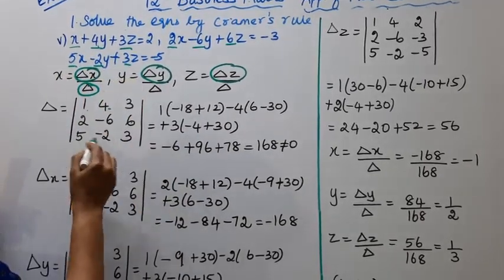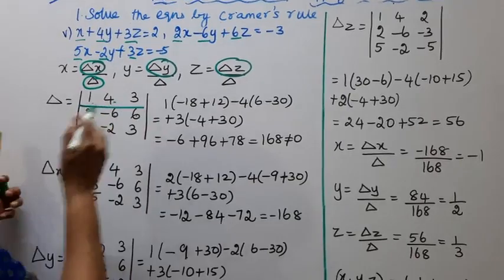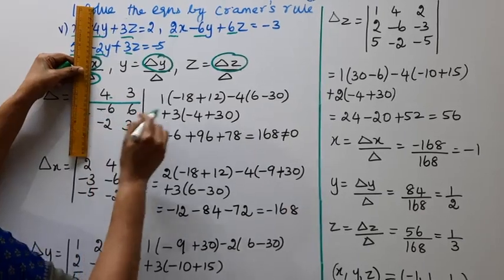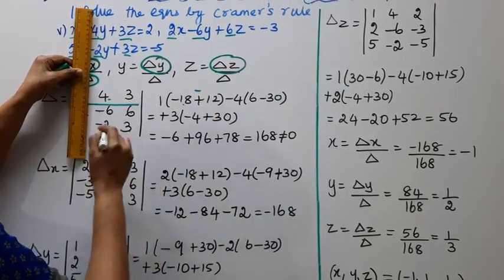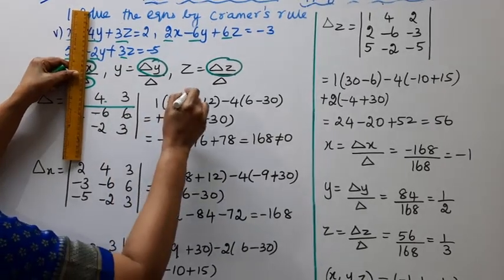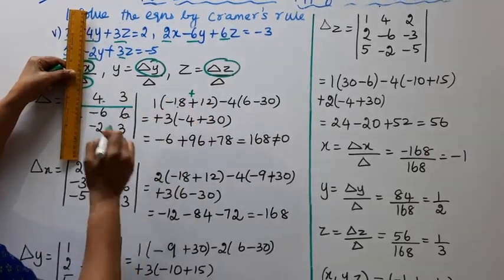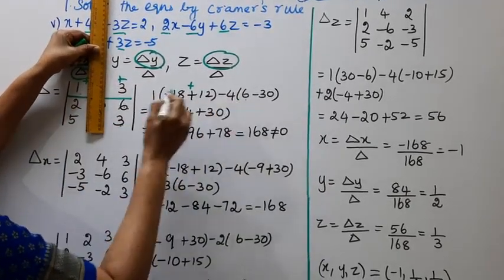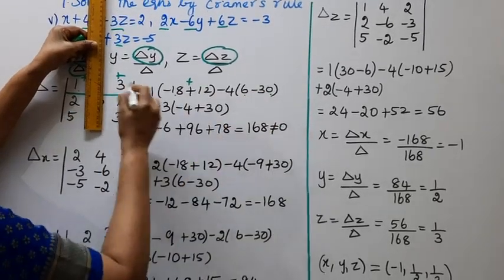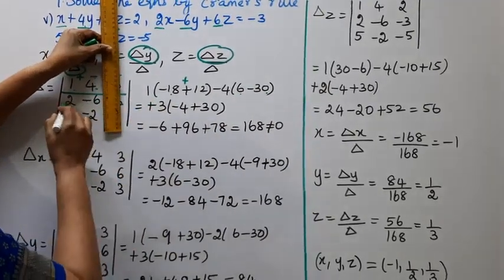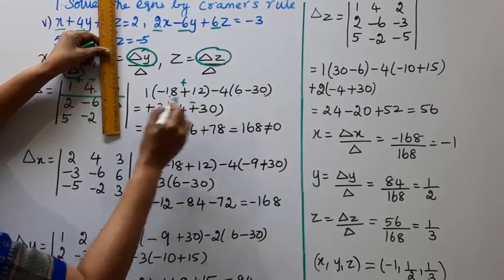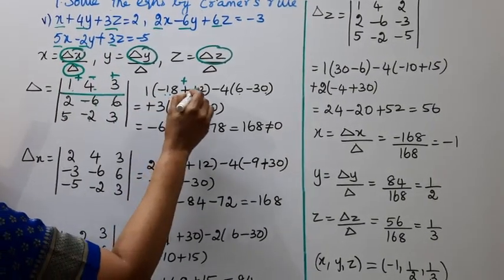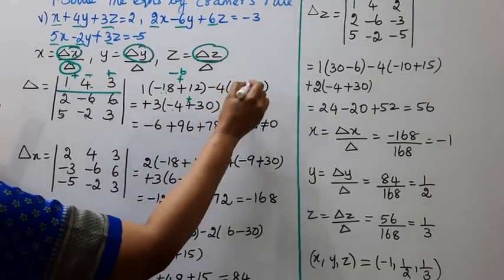Computing delta: expanding along the first row. First element: 5 minus 2, 3. Then plus sign: 2 into 3 is 6, minus 5 into 6 is 30, giving 6 minus 30 which is minus 24. Then minus 4: 2 into minus 2 is minus 4, minus 5 into minus 6 is plus 30, giving minus 4 plus 30 which is 26. Then plus 3: minus 18 plus 12 equals minus 6.